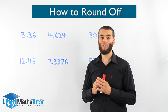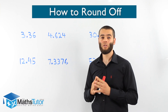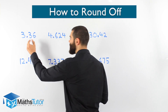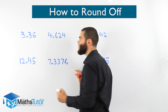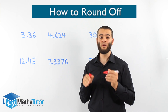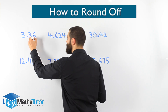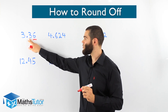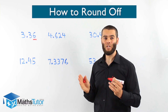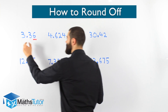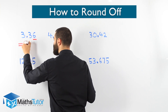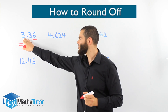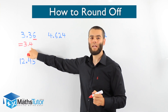We have 3.36. The question is saying: round off to the nearest one decimal place. The nearest one decimal place is this one here. We want to round off to the nearest one decimal place, so we look at the number on its right and ask: are you 5 or more? Yes — 3.36, the 6 is the number on the right of the one decimal place. 6 is 5 or more, so it has the muscles to push up. We round up — it becomes 3.4. The 6 pushes the 3 up and it becomes a 4. So 3.36 rounded off to one decimal place is 3.4.